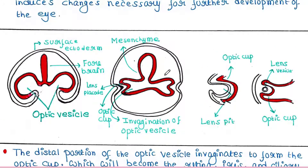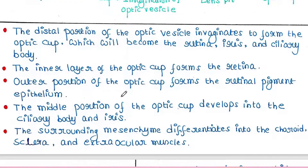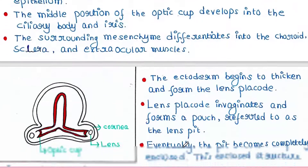The surrounding mesenchyme cells differentiate into the choroid, sclera and extraocular muscles.